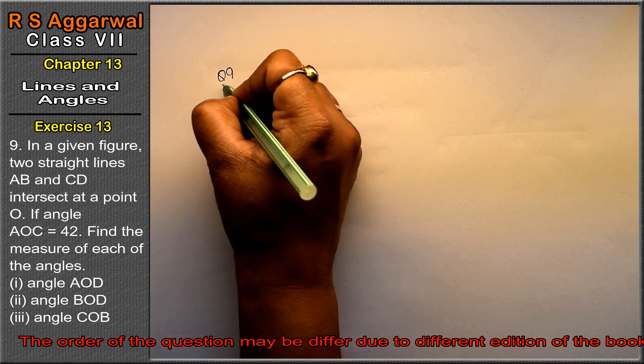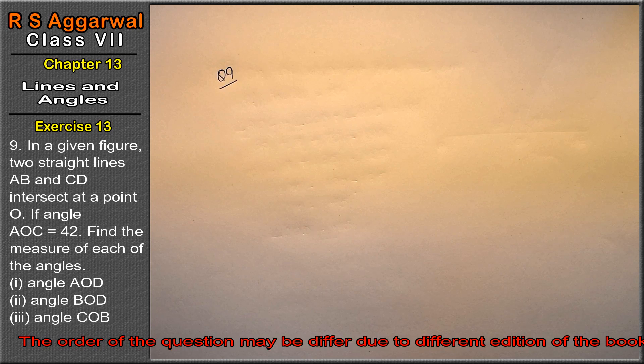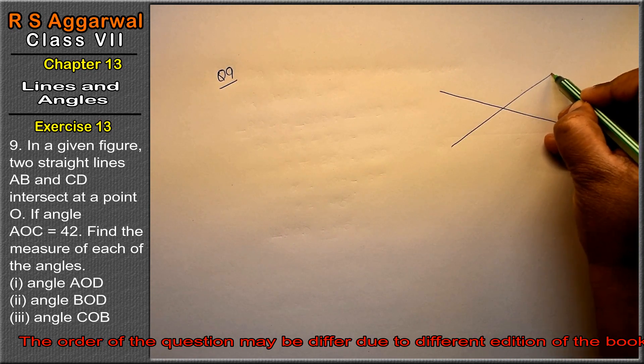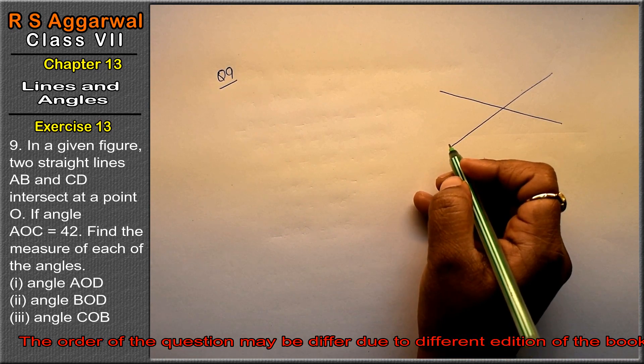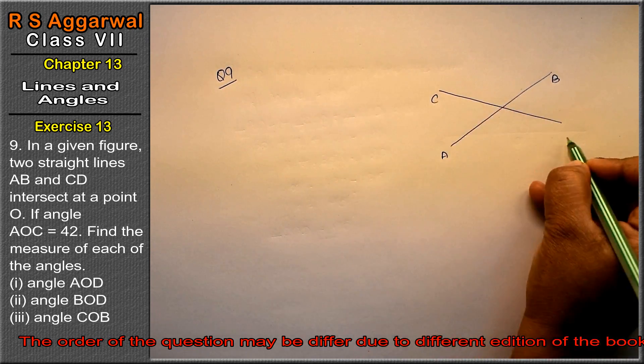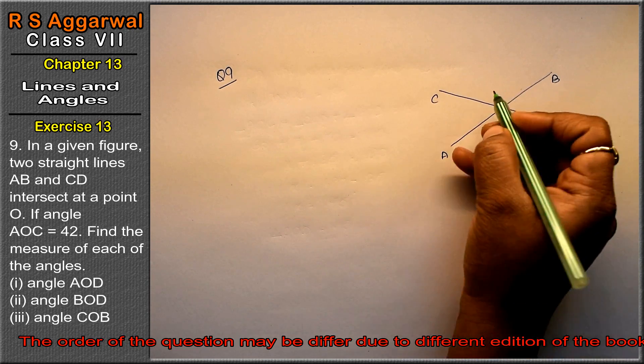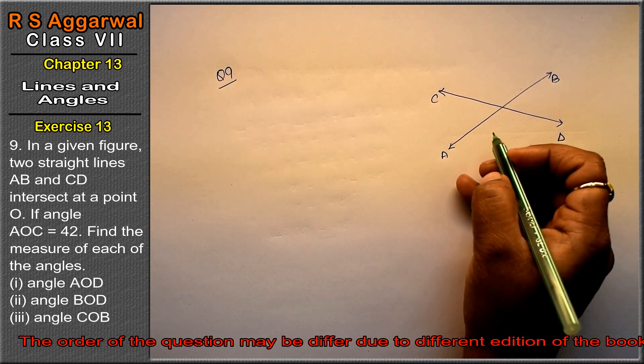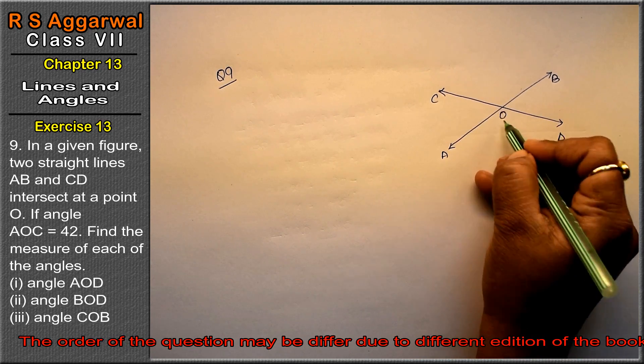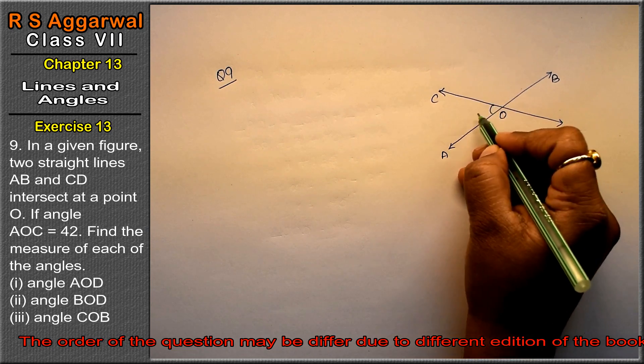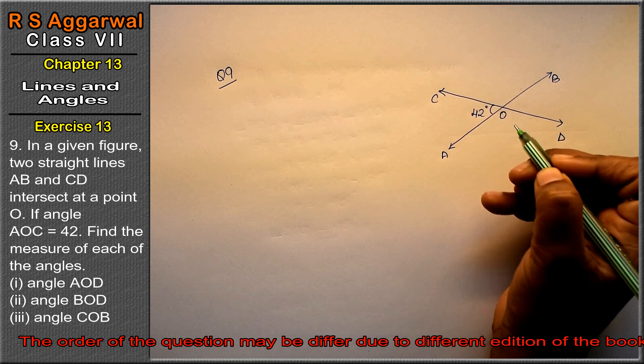Let's do question number 9 of Exercise 13, Lines and Angles. Question number 9 is: In the given figure, two straight lines AB and CD intersect at point O. If AOC equals 42 degrees, then find the measurement of the angles AOD.